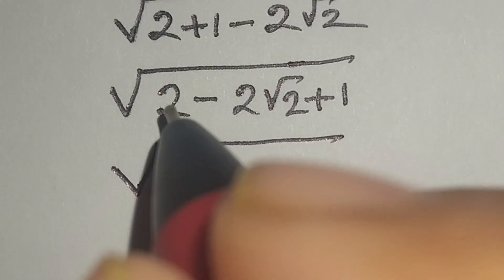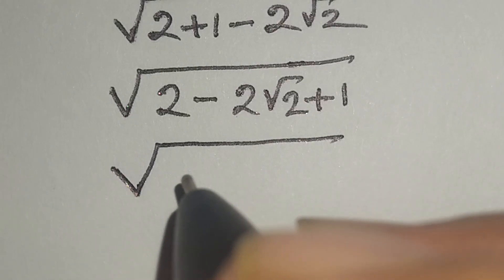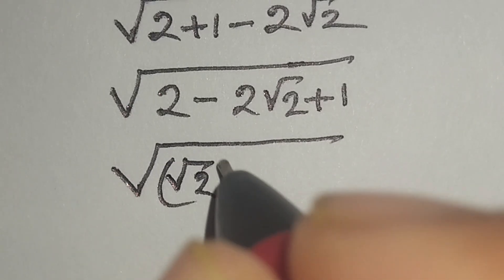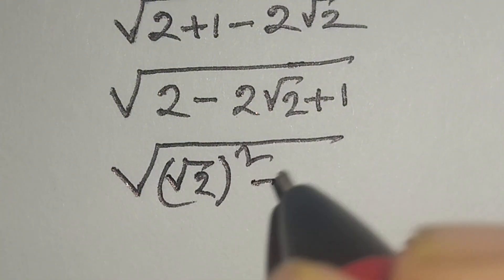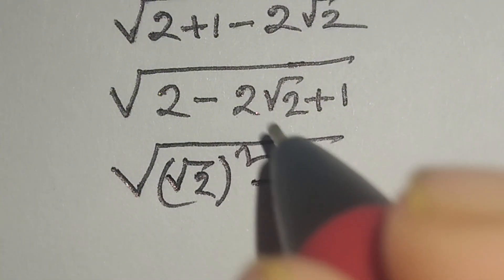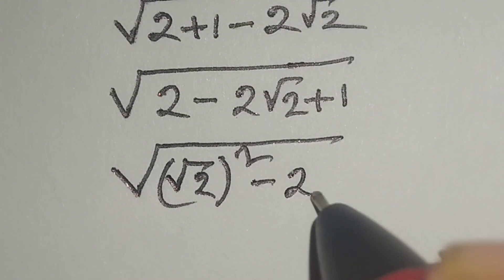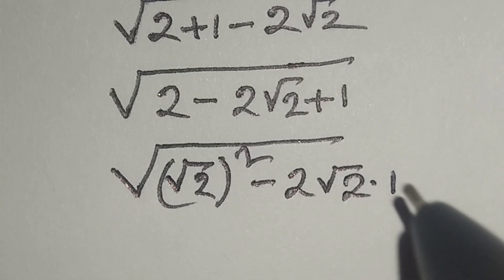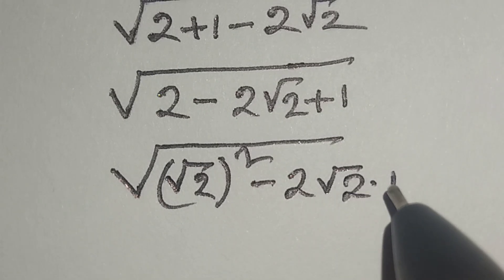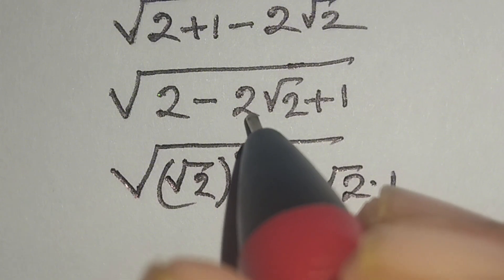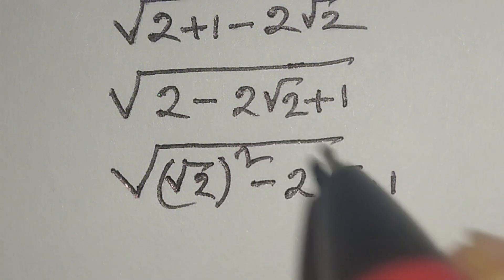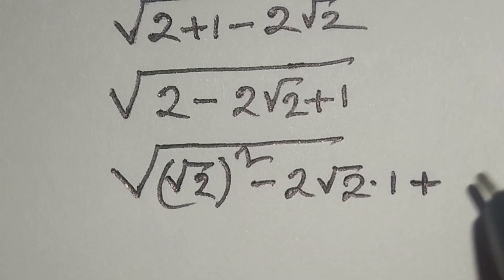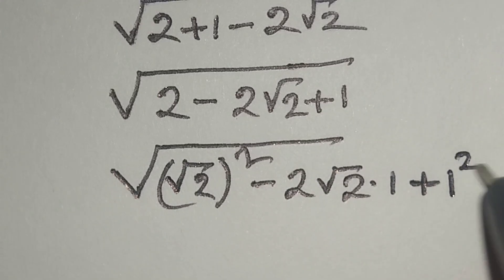Here, this 2 can be written as square root of 2 whole square, minus 2 times square root of 2 times 1 — which is equal to 2 square root of 2 — plus we can write this 1 as 1 squared.